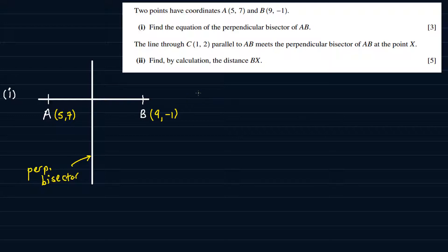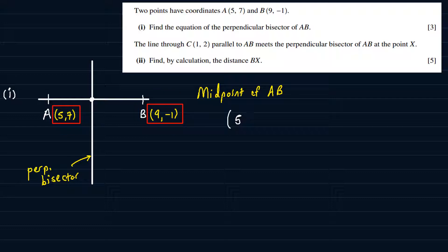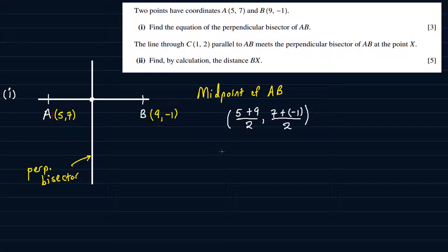First, we'll find the midpoint of AB — that's the point we will need to calculate the equation of the bisector. So midpoint of AB is (5 + 9)/2, then (7 + (−1))/2. This gives us 14/2 and 6/2, so the midpoint of AB is (7, 3).